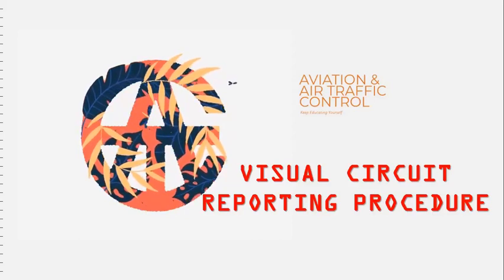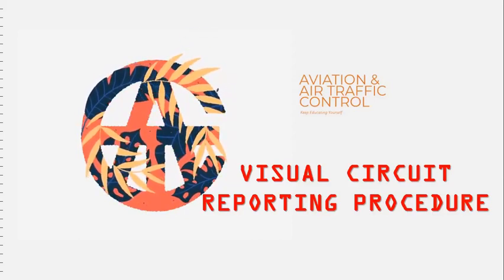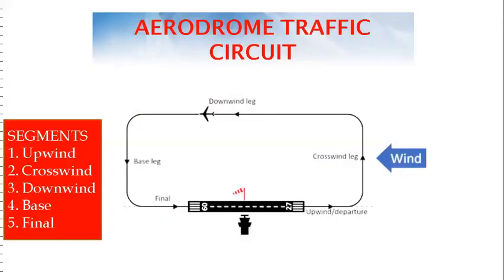Hi viewers, this lecture is about visual circuit reporting procedure. The aerodrome traffic circuit consists of five segments and four turns. It is normally used by aircraft flying under VFR.